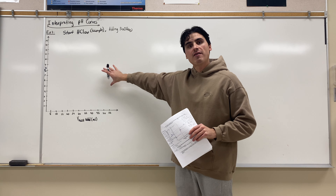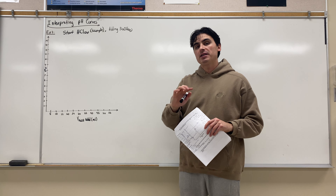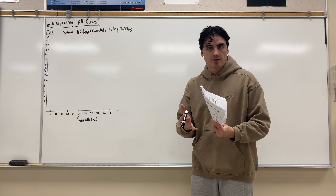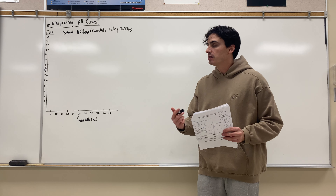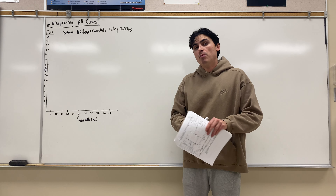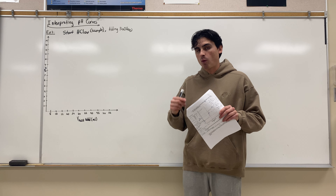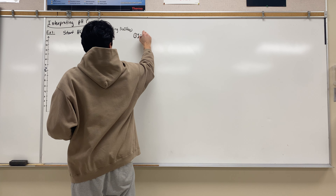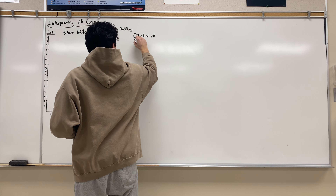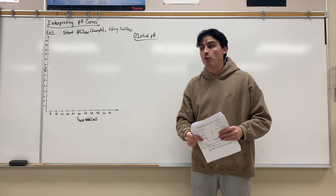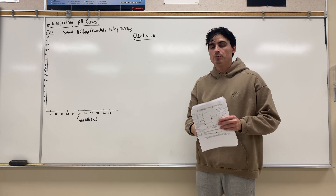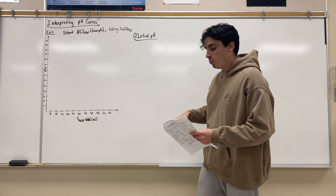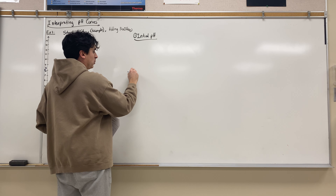These questions, whenever you're having to graph a titration, can be broken down into four steps. The first step is always imagining what do you start with before the titration happens. In this situation, we're starting with HCl, which means before anything is added, what we have is HCl. So the first thing we're going to calculate is the initial pH, using HCl because we start with HCl. The second step is calculating the equivalence point.